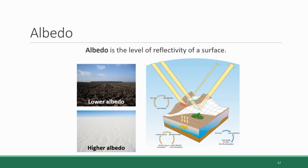This is kind of like the difference between having a car that has black paint in Arizona versus one that has white paint. The black paint absorbs more energy, the white reflects more of it. And that has an impact on how hot or cool your car stays.